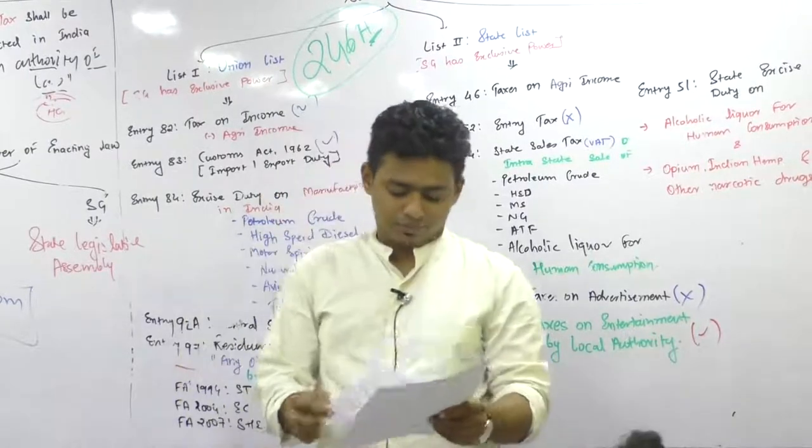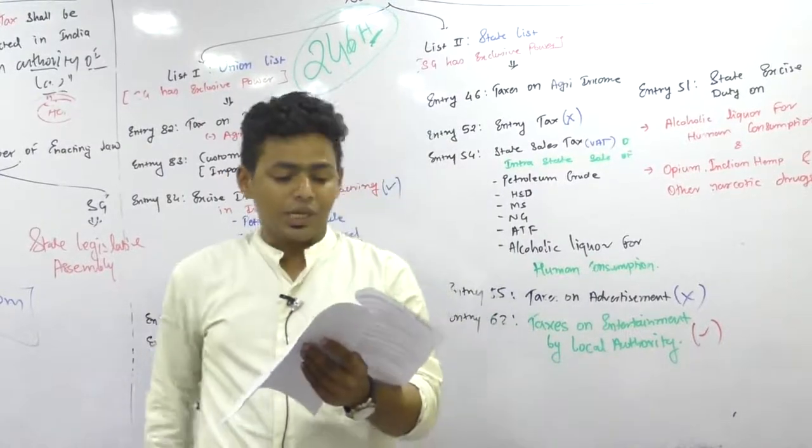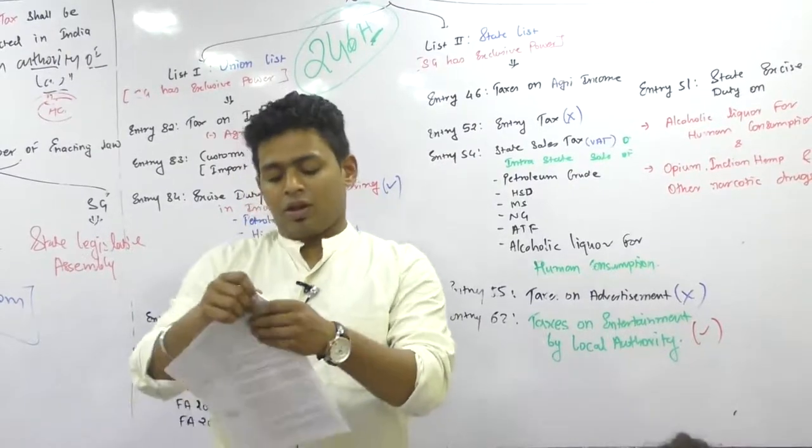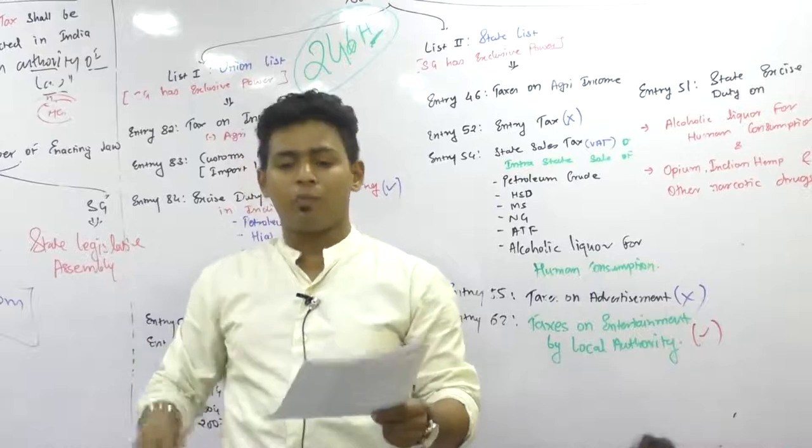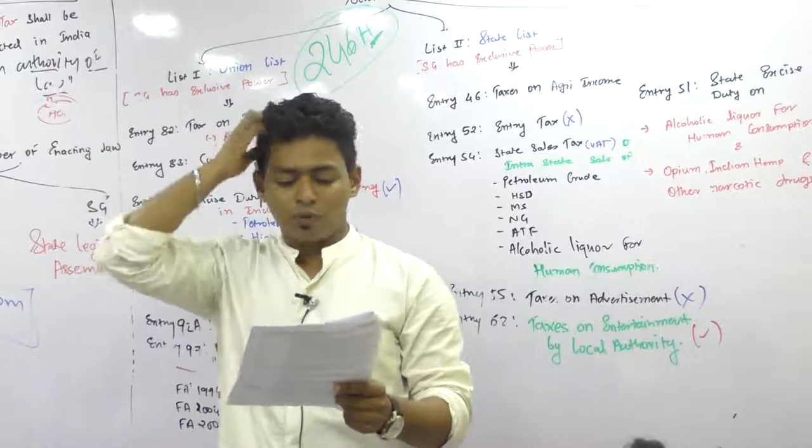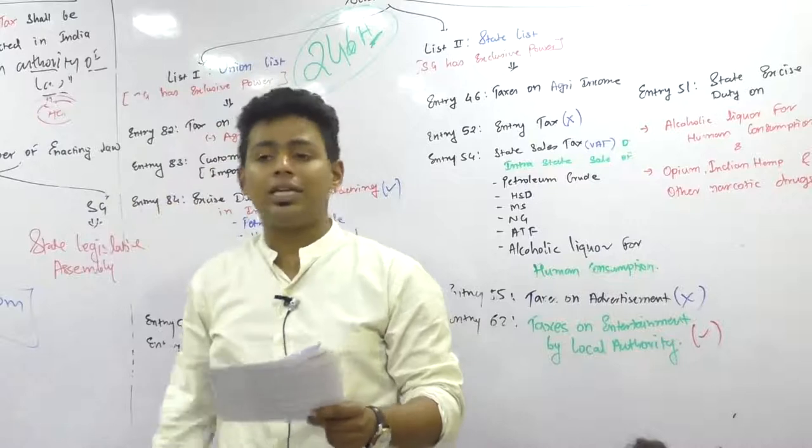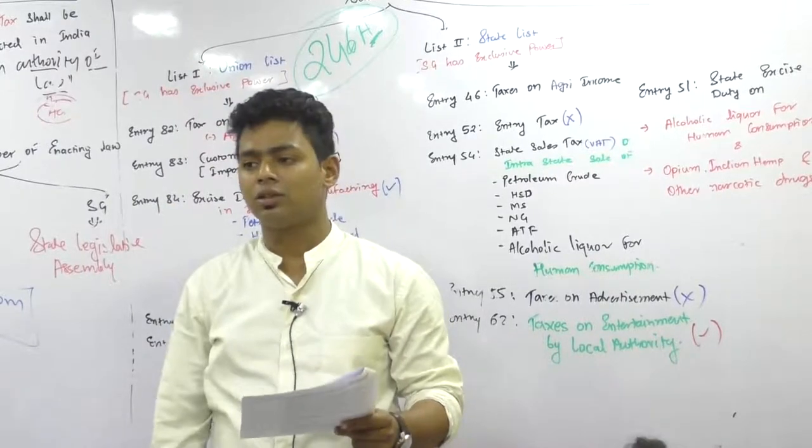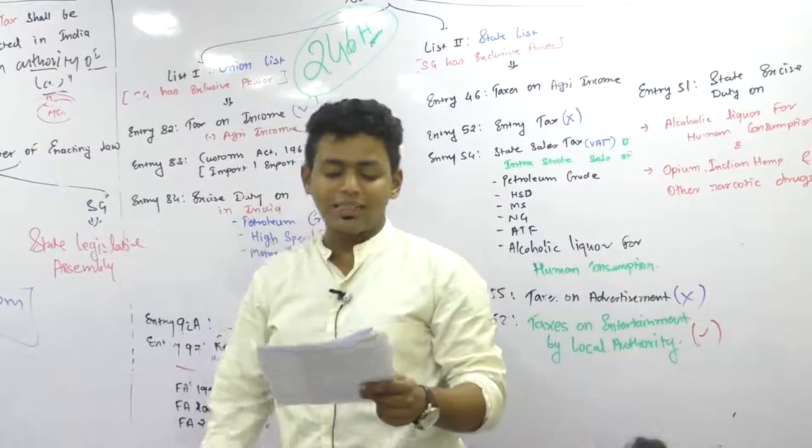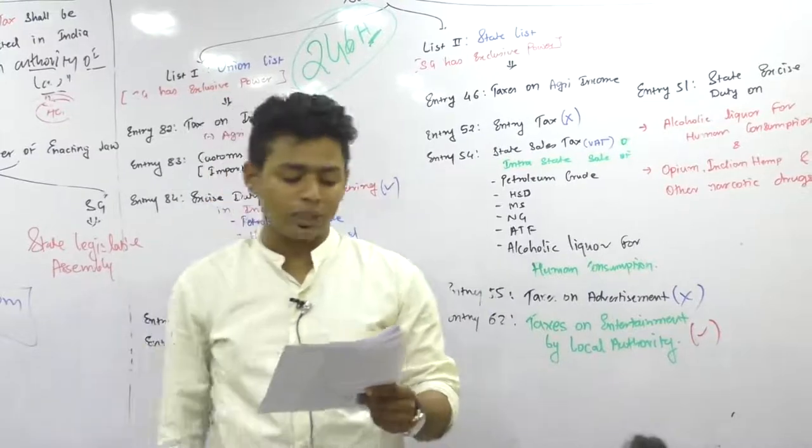Next thing we will discuss later, genesis and concept of GST. Deficiency in existing system, we will discuss tomorrow. Framework. Can you come to the framework document? Can you understand those two levels? The government has adopted dual GST. Dual GST means there are two levels - central level and state level. Destination based tax. Supply is taxable.